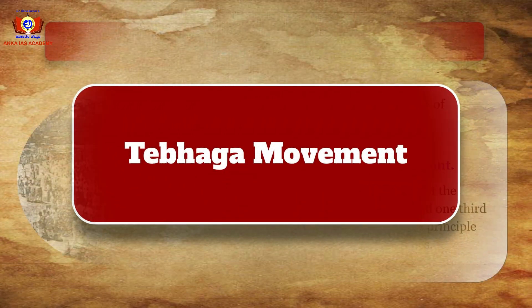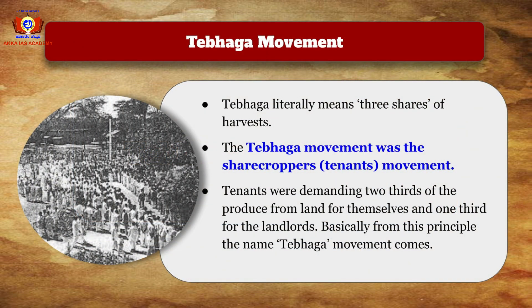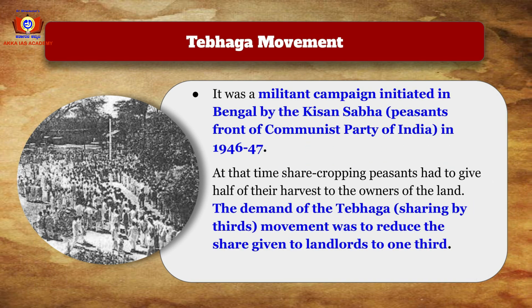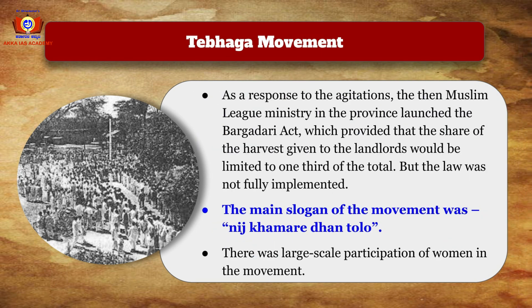The Tebhaga Movement — where 'Tebhaga' literally means three shares of the harvest — was a sharecroppers' movement demanding two-thirds of the produce for tenants and one-third for the landlord. It was a militant campaign initiated in Bengal by the Kisan Sabha, the peasant front of the Communist Party of India, in 1946-47. At that time, sharecropping peasants had to give half their harvest to landowners. As a result of this agitation, the Muslim League ministry launched the Bargadari Act, limiting the landlords' share to one-third, though the law was not fully implemented.